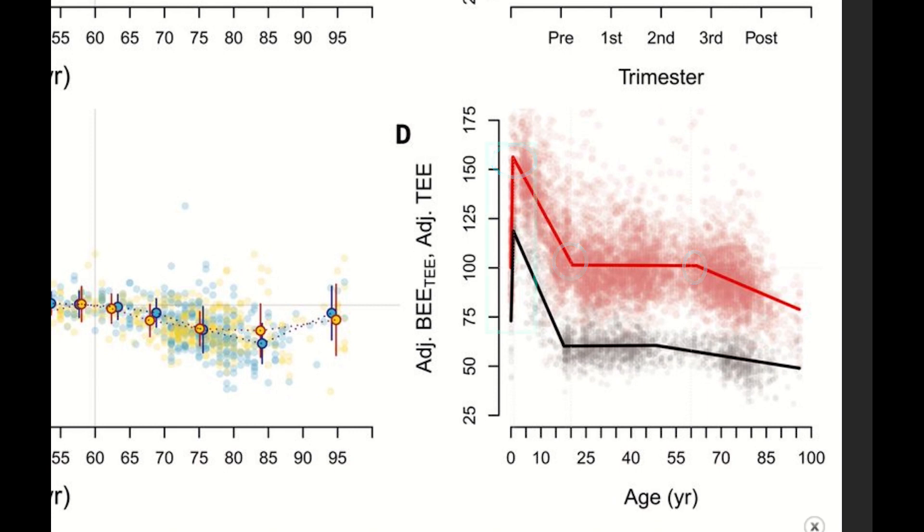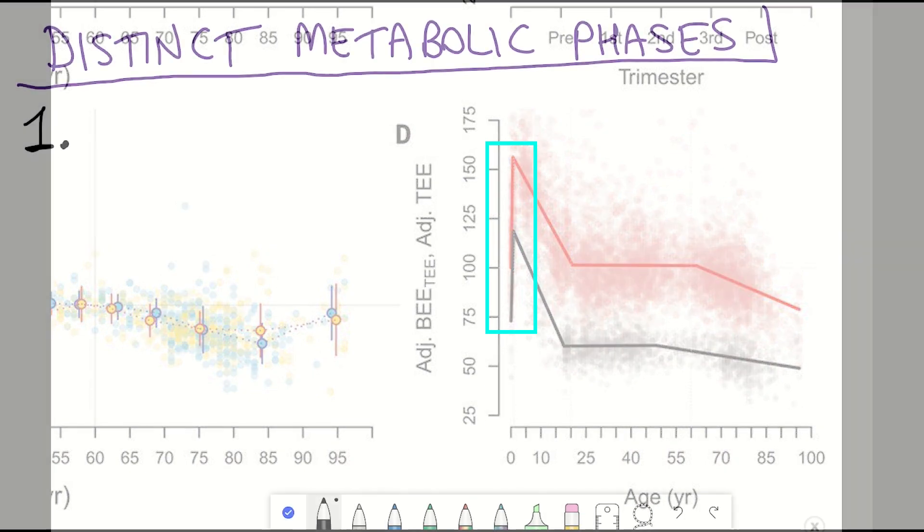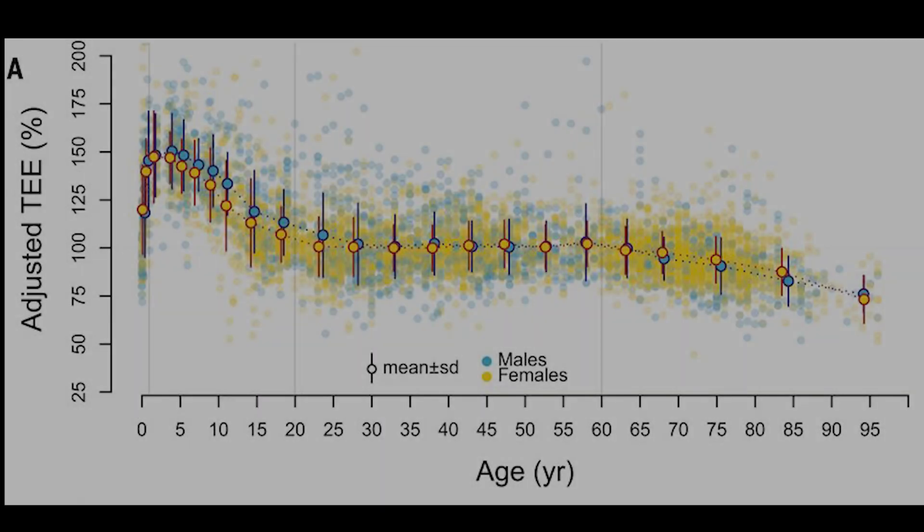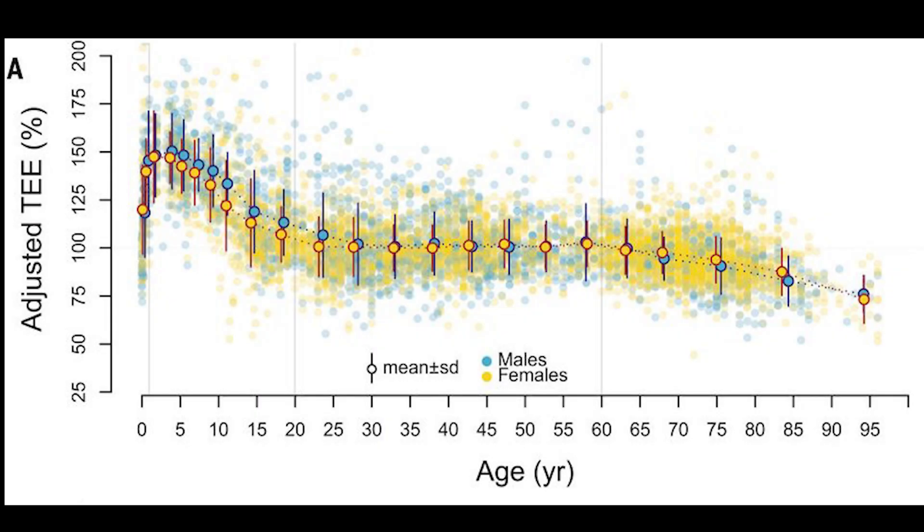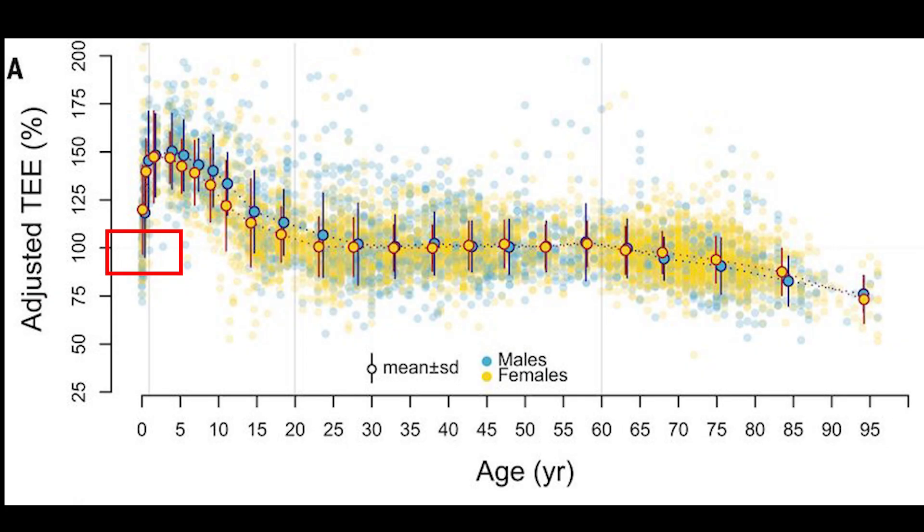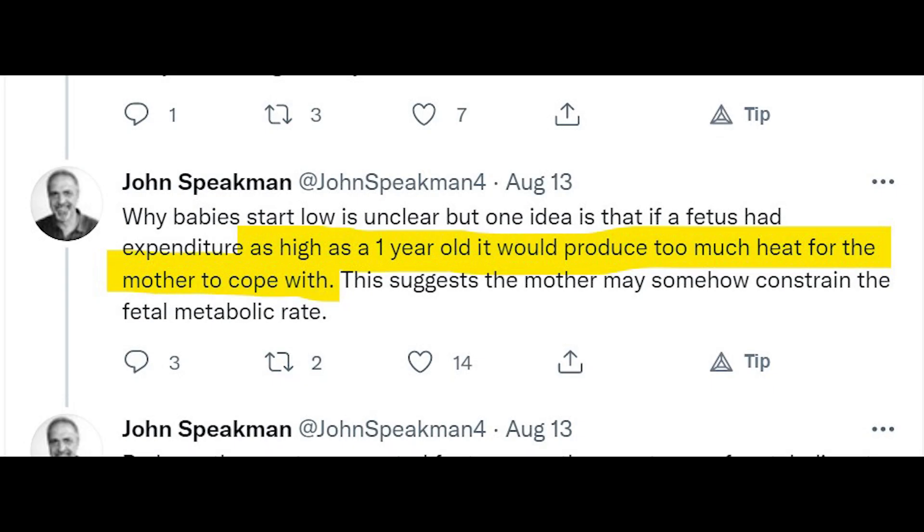And so the first phase is a rapid increase in total energy expenditure, which happens within the first year of birth. And so initially, newborn babies had rates equivalent to adults, but that increased up to 50% by age one. And it's likely that that increase is demonstrating the increased cellular rates of activity, because well, you kind of have a growing child here. So it kind of makes sense. But why they start so low is quite interesting. And the authors speculate that this could be because if they were producing too much heat whilst still in the mother, it might be too much for the mother to handle.